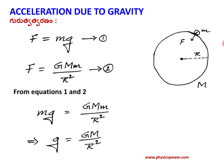Acceleration due to gravity depends on the planet. If the radius is constant, then acceleration due to gravity is proportional to the mass of the planet. If mass is constant, then g is inversely proportional to the square of the radius. So the size of the planet and the height affect the acceleration due to gravity.